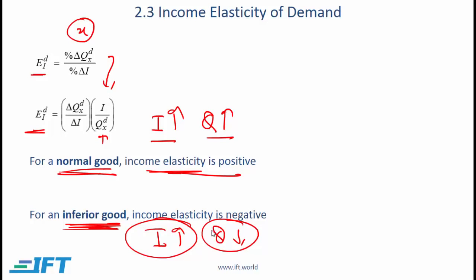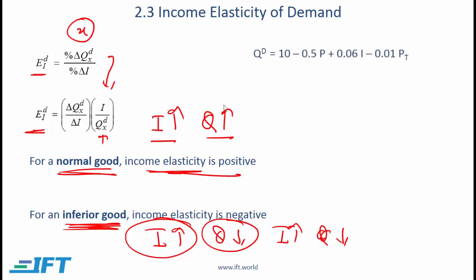In the US context, we can think of fast food as an inferior good. Fast food is relatively inexpensive, so a low-income family going out is probably going to visit a fast food joint. But as income levels go up, they might prefer a fancier restaurant. So if the quantity demanded for fast food comes down as income rises, fast food is an inferior good.